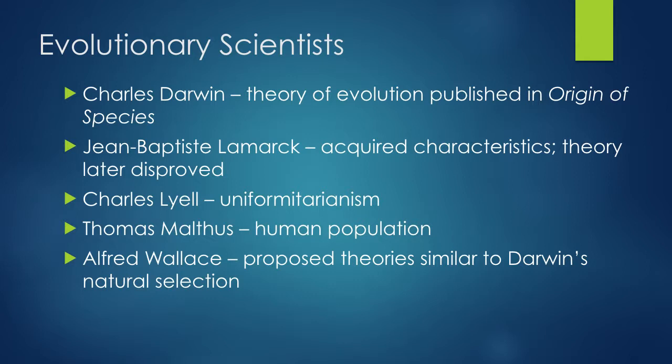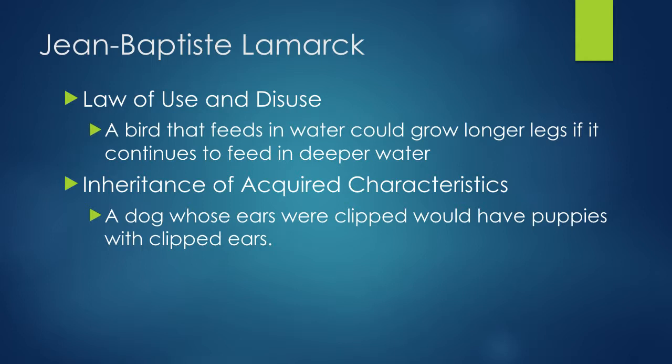First up we have Jean-Baptiste Lamarck. He had two principles: the law of use and disuse, and the inheritance of acquired characteristics. Basically he said that if an organism used a specific part of its body more often, it would become bigger or stronger, and that characteristic could be passed on to its offspring. For example, if a water bird fed in water that continually got deeper and deeper, the bird could grow longer legs, and those longer legs could be passed on to its offspring.